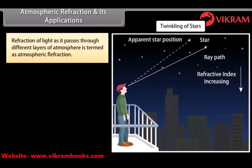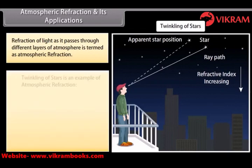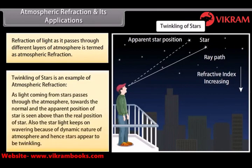Our atmosphere is not uniformly dense at any local place. Depending on local conditions, it may have hot and cool air near the ground. Hot air is lighter than cooler air and hence has a lesser refractive index than cooler air. Due to this, starlight or sunlight entering the atmosphere undergoes refraction. This is known as atmospheric refraction. As light coming from stars passes through the atmosphere, the apparent position of the star is seen above its real position. Also, starlight keeps on wavering because of the dynamic nature of the atmosphere, and hence stars appear to be twinkling.